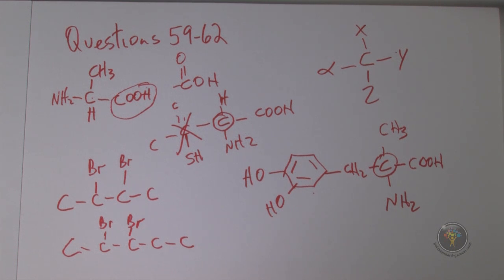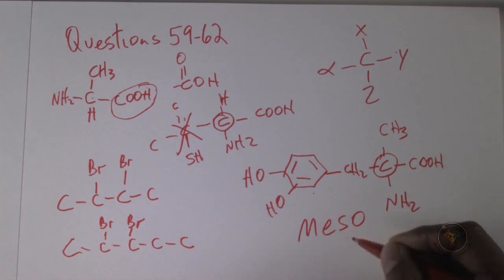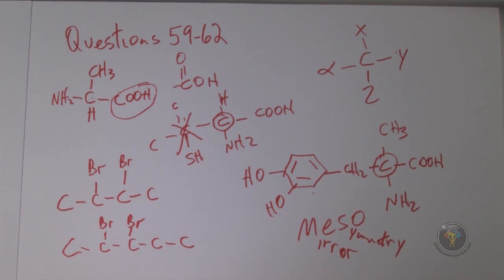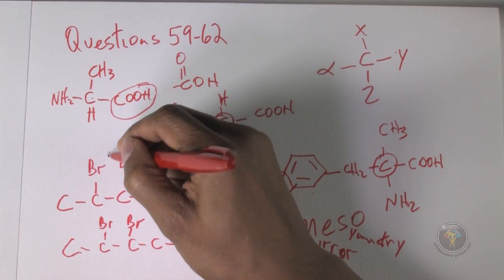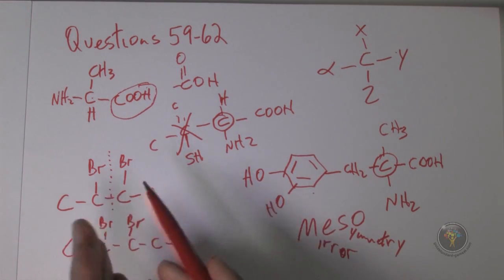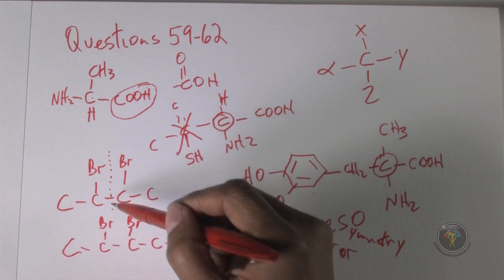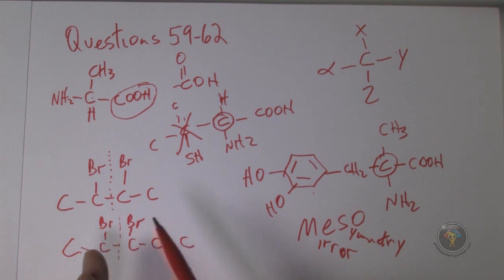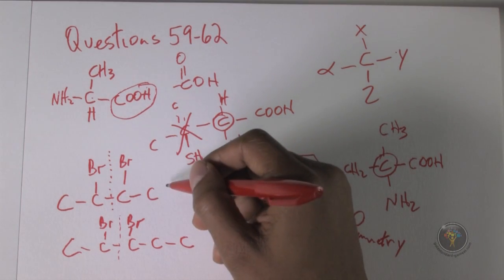We compare that with 2,3-dibromopentane: 1, 2, 3, 4, 5 — pent means five, like pentagon. The question asks which compound has a meso form. Meso means mirror of symmetry — you draw a line within the molecule and see if you can fold it onto itself. If you can find that internal mirror of symmetry and there are chiral carbons, then the molecule is a meso compound. Drawing a line down the middle of 2,3-dibromobutane, folding it onto itself — there is a plane of symmetry.